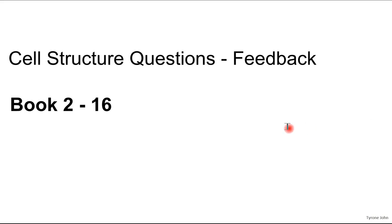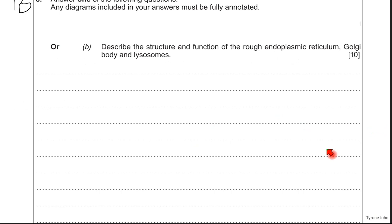This is the feedback for question 16 of the cell structure booklet in book 2. This is an essay question worth 10 marks, and it's asking you to describe the structure and function of the rough endoplasmic reticulum, the Golgi body, and the lysosomes.